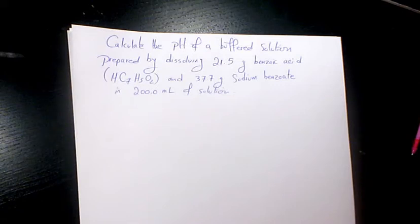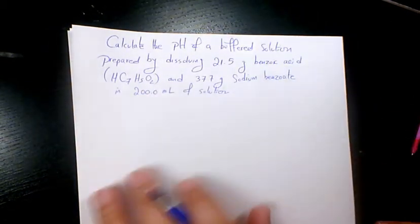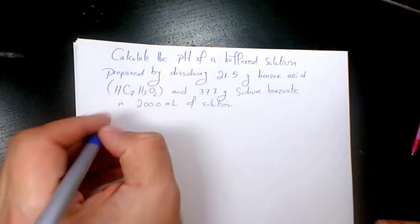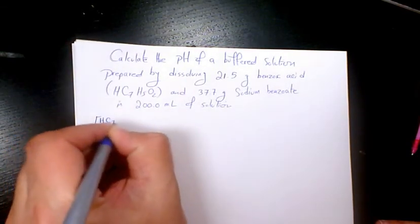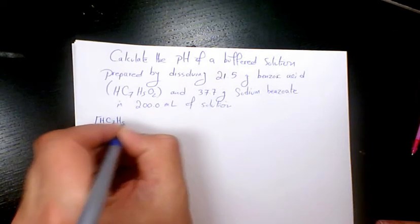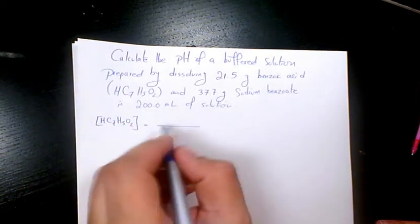First of all I need to find out the concentration of benzoic acid and sodium benzoate. I'm gonna have HC7H5O2 concentration equals number of moles divided by volume. Volume is 0.2 liter.